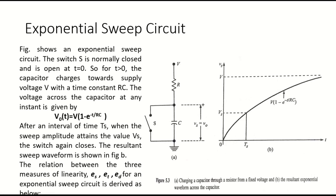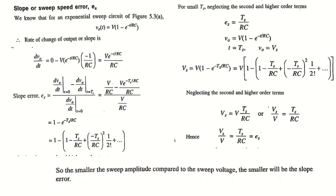Now, with this exponential sweep circuit, we will derive the relationship between the linearity parameters: slope or sweep speed error, transmission error, and displacement error. The slope or sweep speed error for the exponential circuit can be derived as follows. The output is an exponential signal represented as V0(t) = V × (1 − e^(−t/RC)).